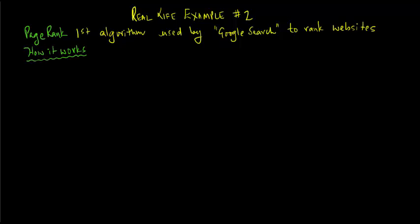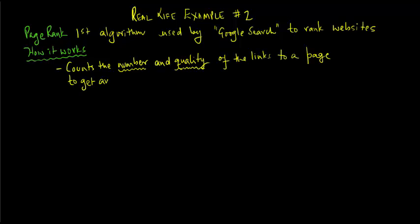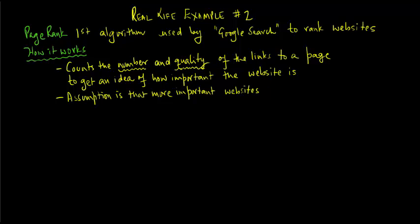The algorithm counts the number and quality of the links to a page to get some idea of how important the website actually is. The underlying assumption is that the more important websites are likely to receive more links from other websites.